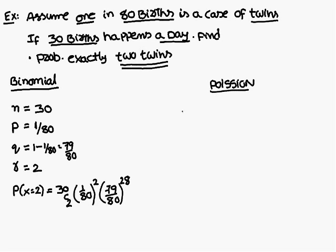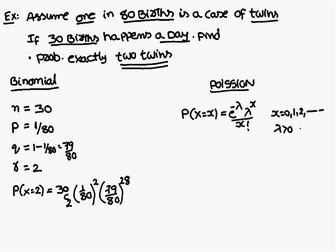Now using the Poisson distribution. The formula for the Poisson distribution is: P(X = x) = e^(−λ) × λˣ / x!, where x takes values 0, 1, 2, and so on, and λ > 0 is called the parameter. The value of lambda can be found using the formula λ = n × p.